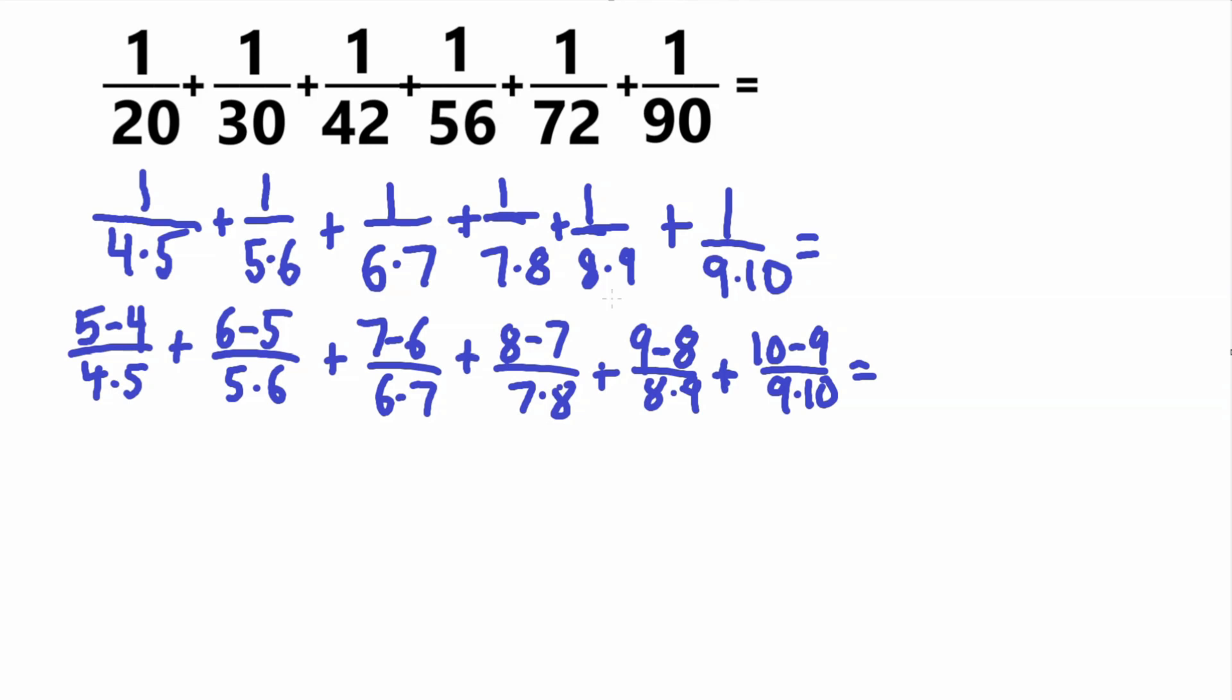And now, so we have it written like this. So we have our numerator rewritten and our denominator rewritten, but this is all still equal to this top here. So what are we going to do next? Well remember, we're subtracting these values in the numerators, right? And they have the same denominators, so we can actually separate the fractions. So this 5 minus 4 over 4 times 5 is the same as 5 over 4 times 5 minus 4 over 4 times 5. We can separate them because they have the same denominator.